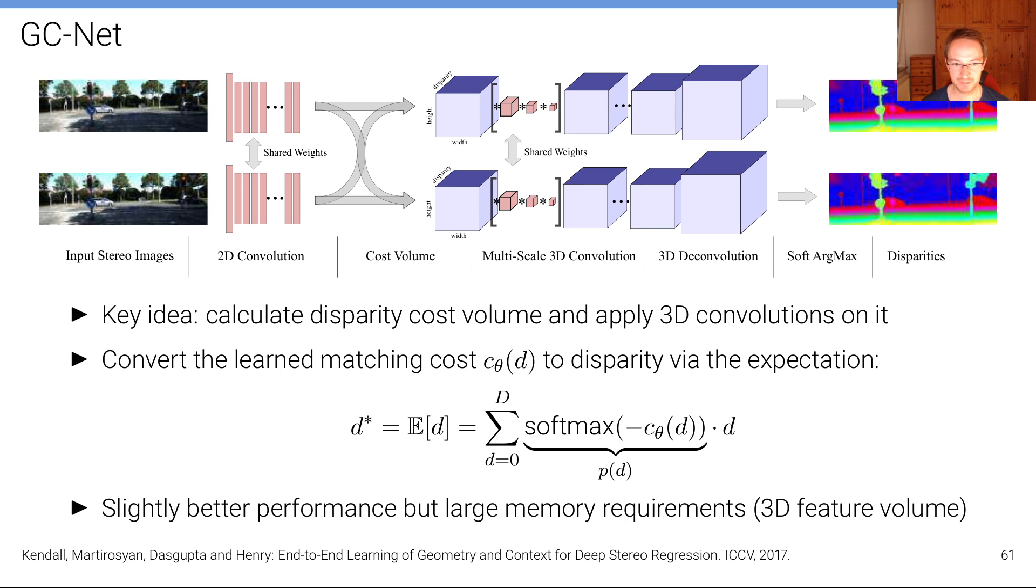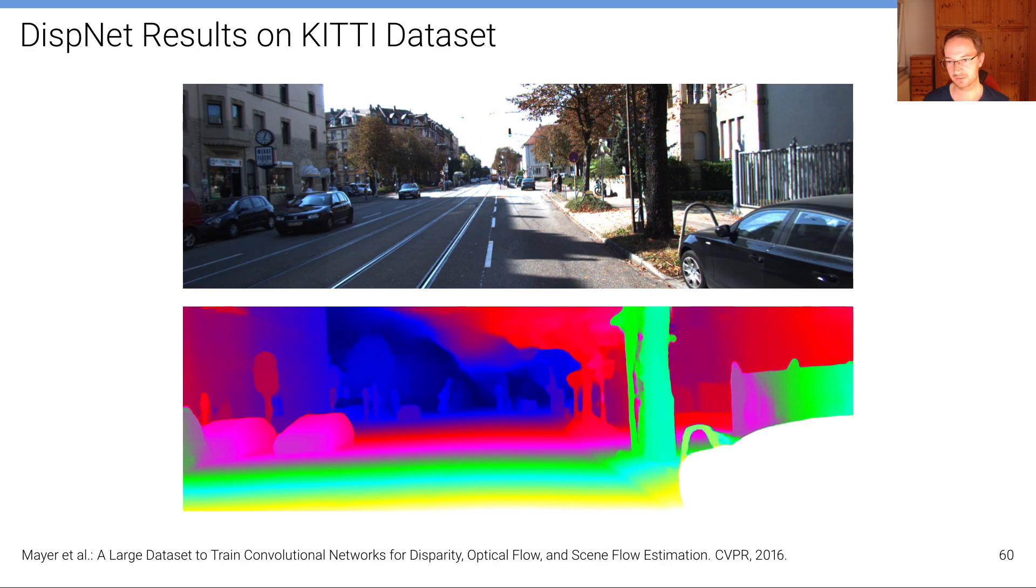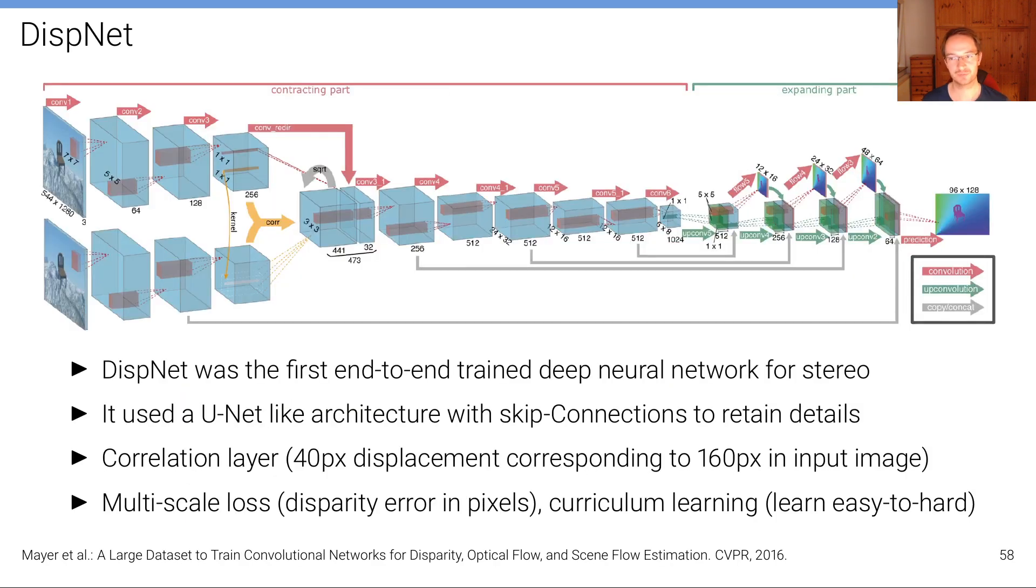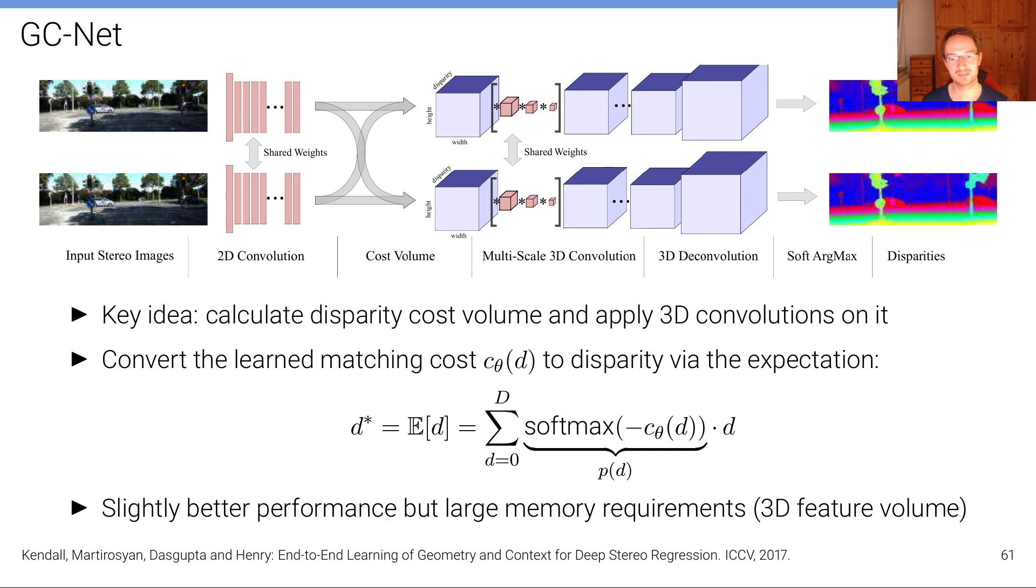One thing that was also done here was that the disparity estimation problem wasn't used to be as in the DispNet case here as a regression problem but instead as a problem where now because we have these 3D convolutions on that volume we can predict a matching cost also for each disparity hypothesis. So we can have now for each at each location at each pixel